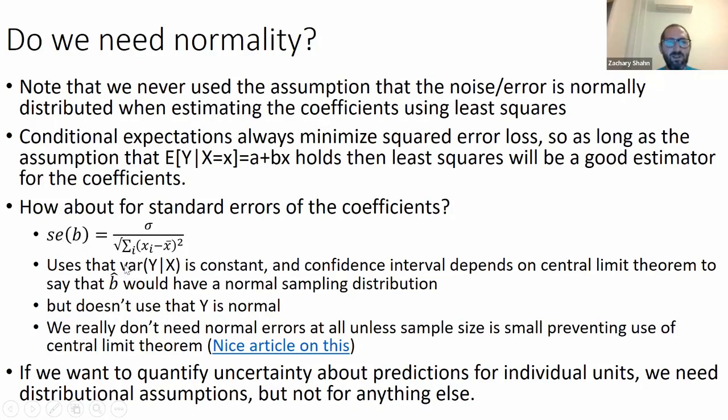It's talking about, do we need normality for anything? To get this formula, you need that the variance of Y given X is constant. And to then do inference about B, assuming that B hat is normal, you need the central limit theorem. So that just means you need a bunch of data points. But neither of those requires that Y is actually normally distributed around its conditional expectation given X. If you have a very small sample, so that the central limit theorem doesn't actually kick in, then you do need normality. But for most of the data sets that you'd use in public health, they're going to be pretty big for the most part. And you don't need normality to get valid standard errors for B either.